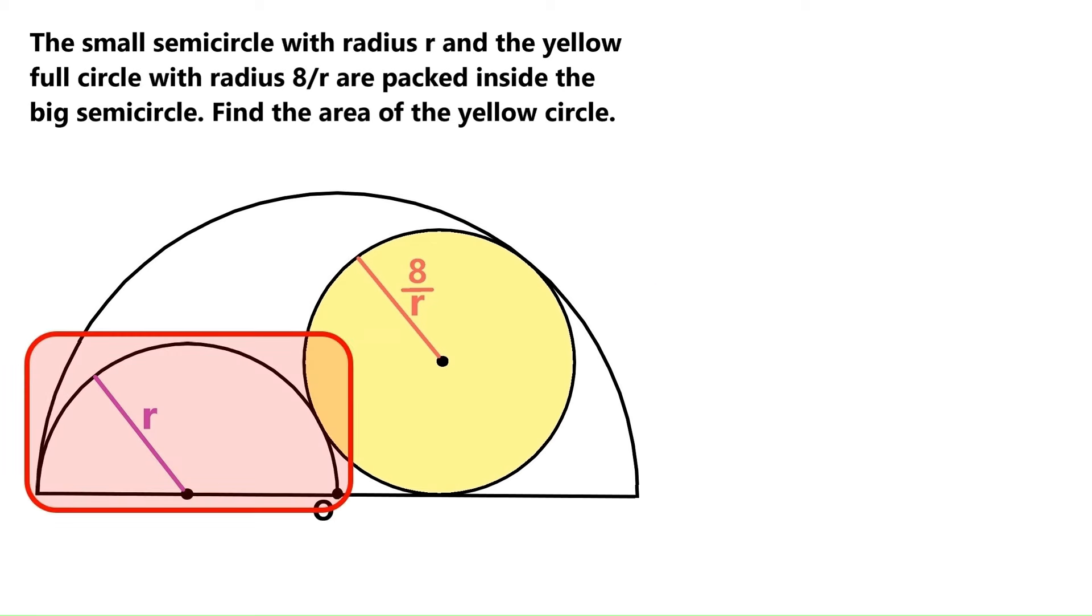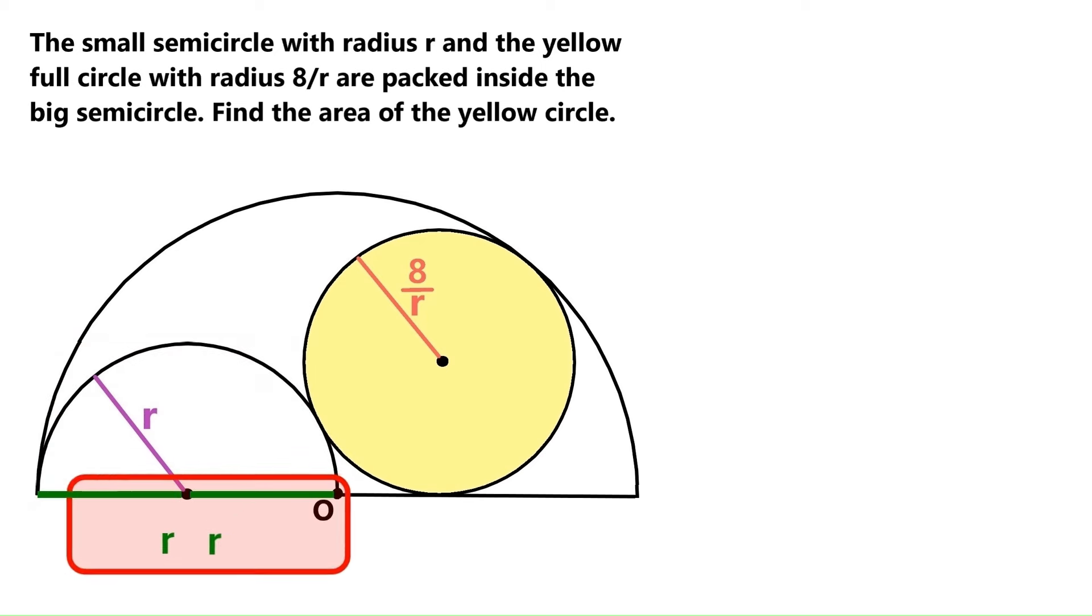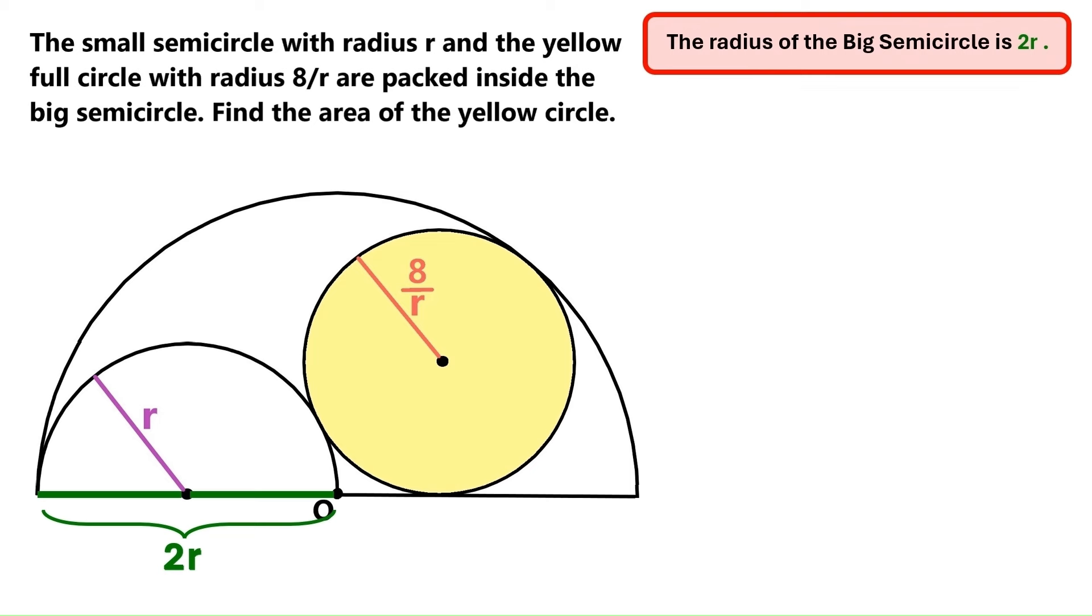We know this semicircle's radius is r, so let's draw a radius r here, and another here. And it becomes clear that the radius of the big semicircle is 2r. Let's take a note up here, so that we don't forget it.